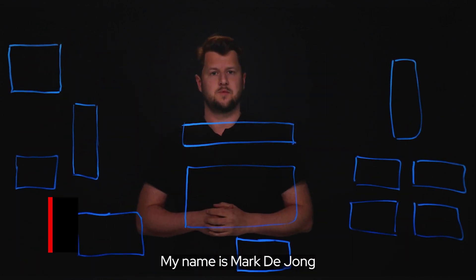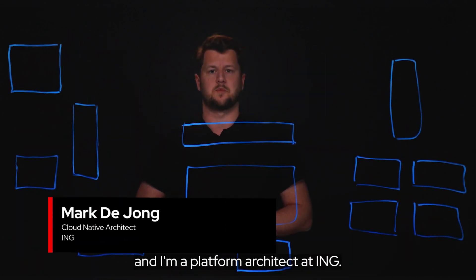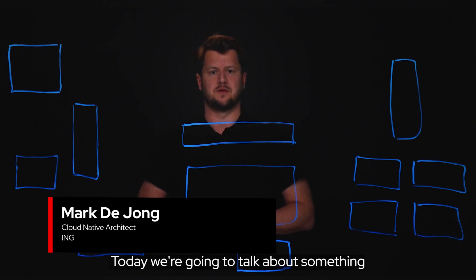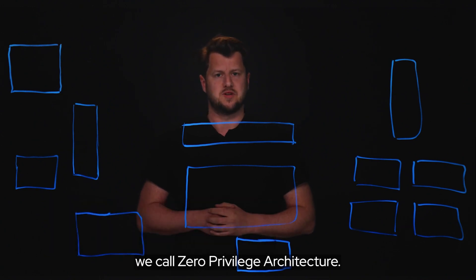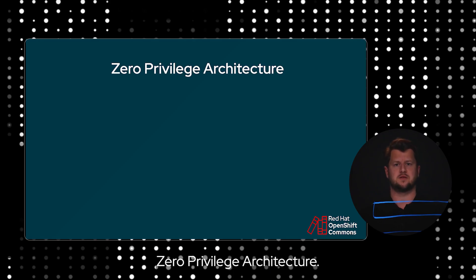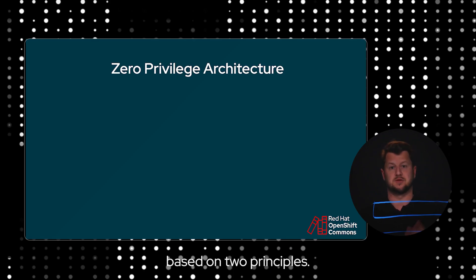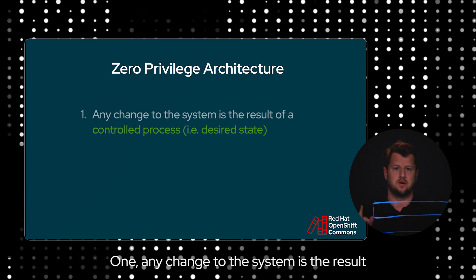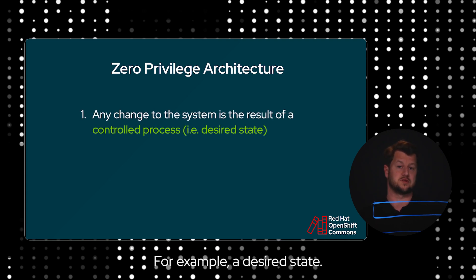Hi everyone, my name is Mark de Jong and I'm a platform architect at ING. Today we're going to talk about something we call zero-privileged architecture. Zero-privileged architecture is a way to design secure systems based on two principles. One, any change to the system is the result of a controlled process, for example the desired state.